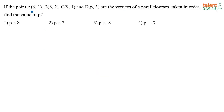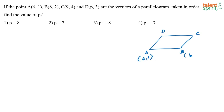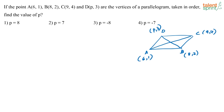If the points A, B, C and D are the vertices of a parallelogram taken in order, then what is the value of P? You have a parallelogram with vertices A, B, C, and D given as 6,-1; 8,-2; 9,-4; and P,3. They are asking for the value of P. The property to use here is that the diagonals of a parallelogram bisect each other.